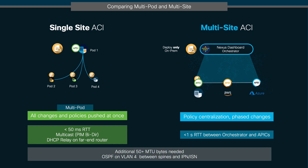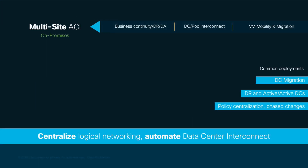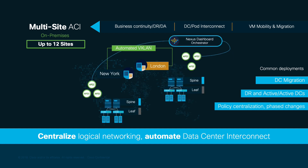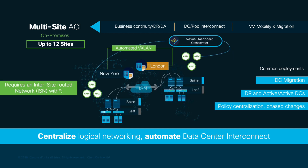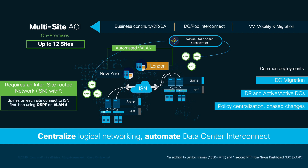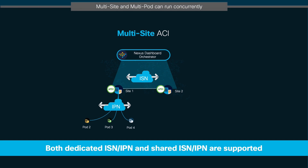If you have a larger distance between sites, or if you need to scale beyond two sites and up to 12 sites, Nexus Dashboard Orchestrator will need you to use an intermediate routed network called the Inter-Site Network, or ISN. Just like with multi-pod IPN, the ISN first-hop devices will connect to the spines on each site using OSPF on VLAN 4. However, in this case, no multicast nor DHCP relay is needed, making the configuration and requirements much simpler. With this approach, you can connect multiple ACI sites or data centers globally across the world under a single pane of glass. It is important to mention that if you're currently running multi-pod and you have an existing IPN, you could reuse it to behave as an ISN as well.